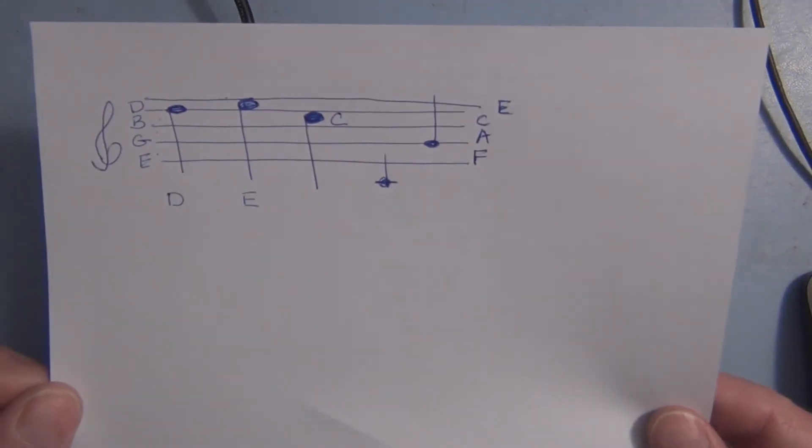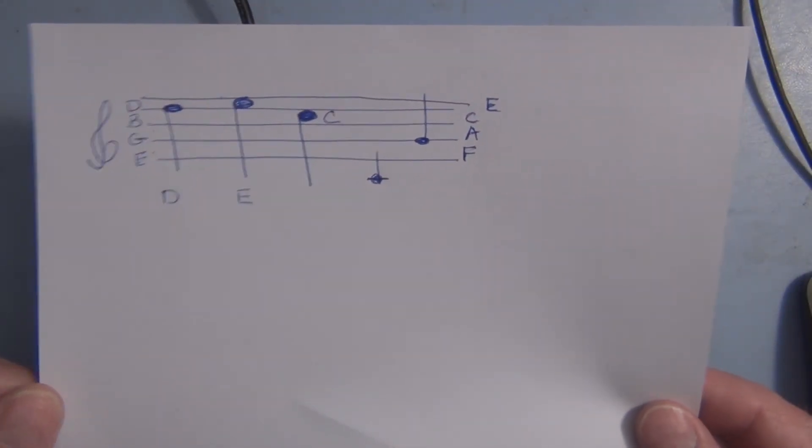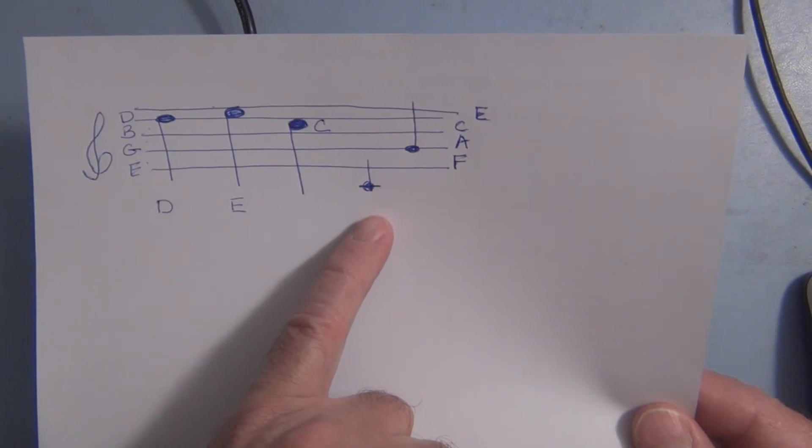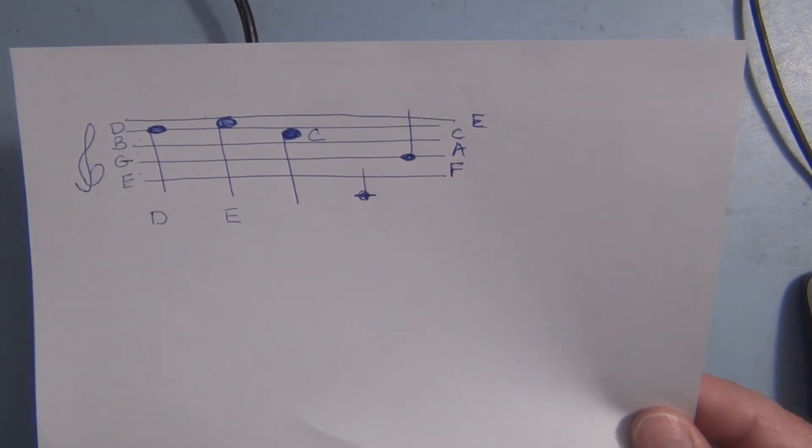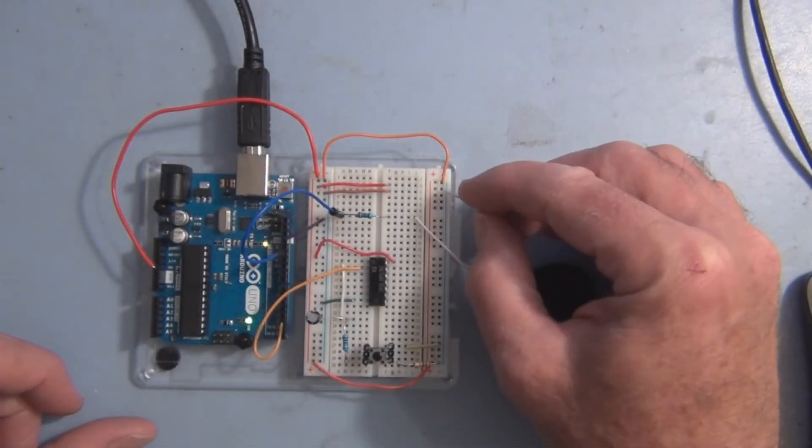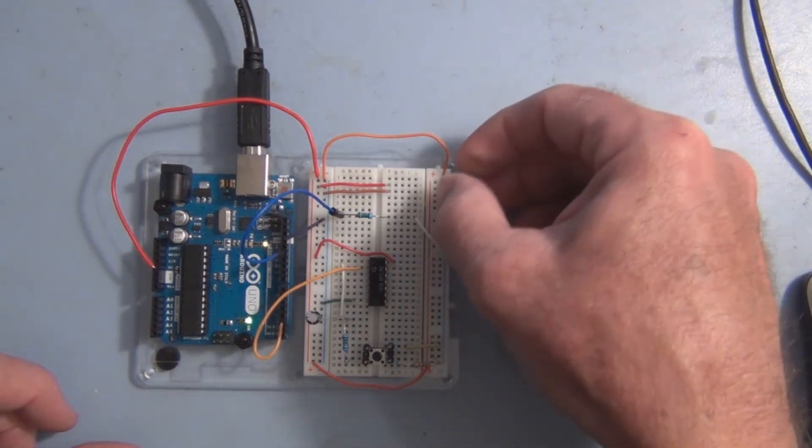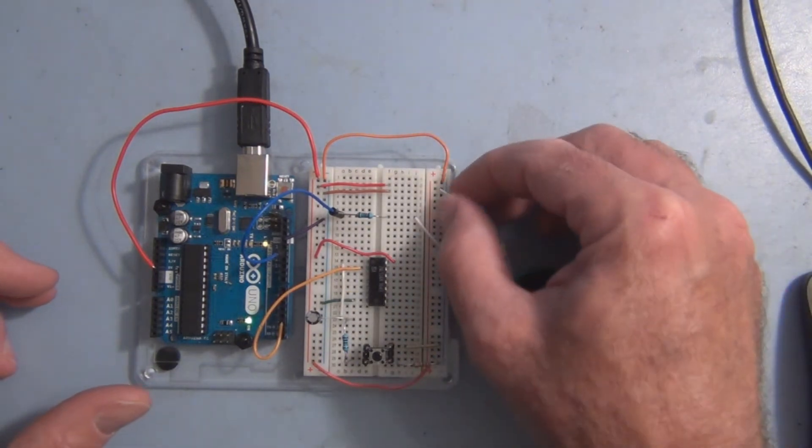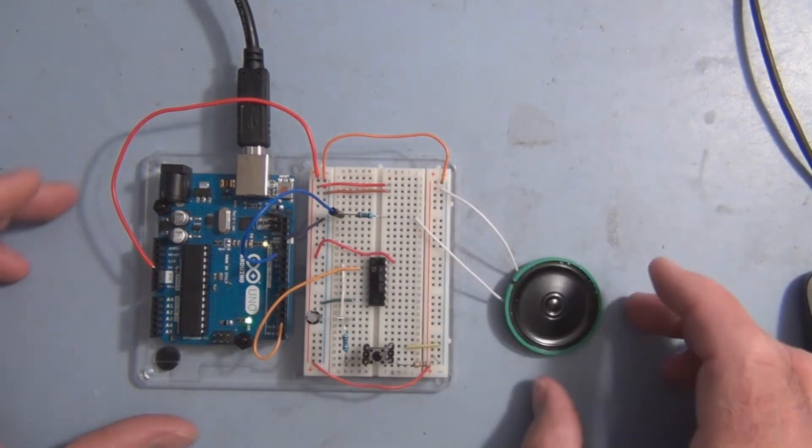And again this is D, E, C - I think this is C flat, A. Put that in there.